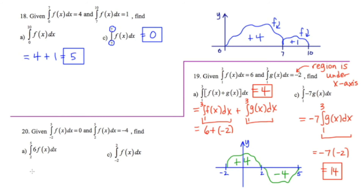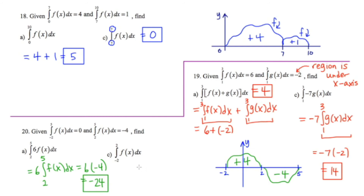In 20a, there's a constant in front, so I write this as 6 times the definite integral from 2 to 5 of F, giving 6 times negative 4, which is negative 24. In 20c, we need the area under F from negative 2 to 2. Looking at the schematic we drew, this is going to be an answer of 4.